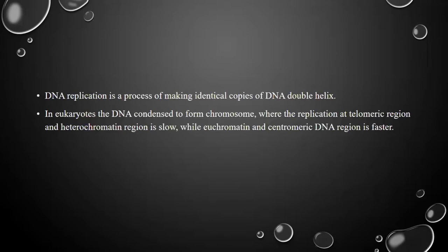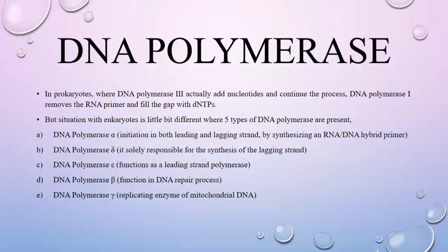In prokaryotes, DNA polymerase 3 adds nucleotides and continues the replication process, while DNA polymerase 1 removes the RNA primer and fills the gap with dNTPs. However, the situation in eukaryotes is a little different, where five types of DNA polymerase are present.